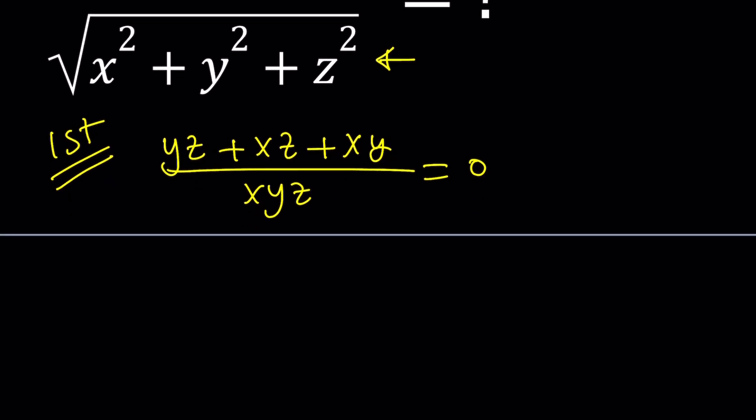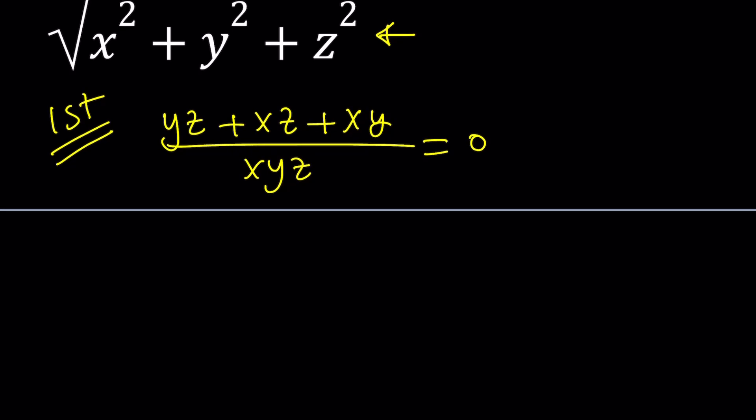When is a fraction equivalent to 0? Obviously, you're not allowed to divide by 0, so the denominator should be non-zero, and we know that's not going to happen. The numerator is supposed to be 0. So 0 divided by non-zero. This means xy plus xz plus yz equals 0.